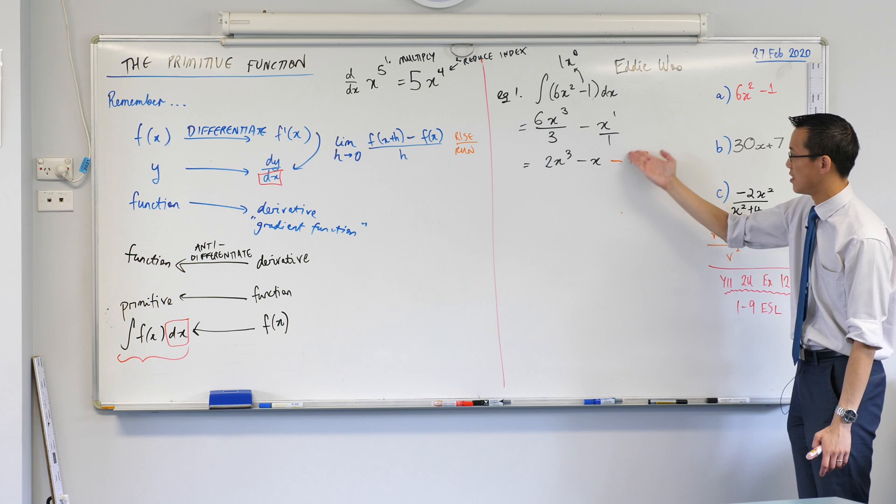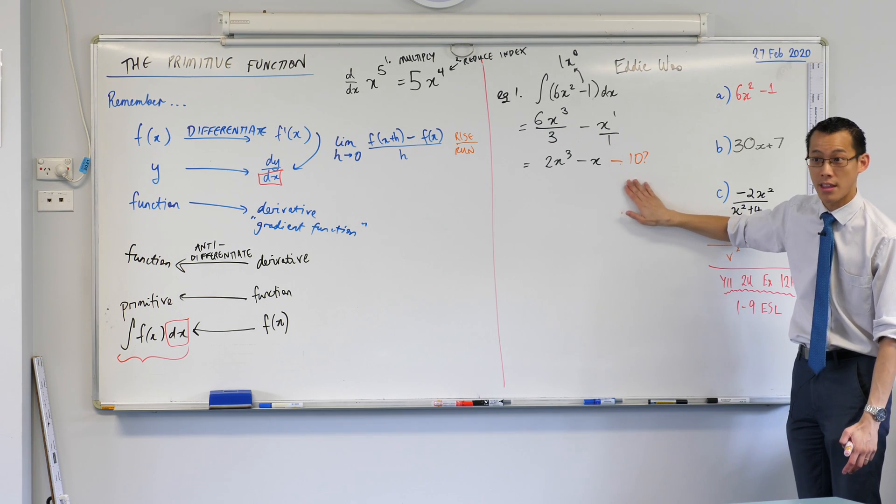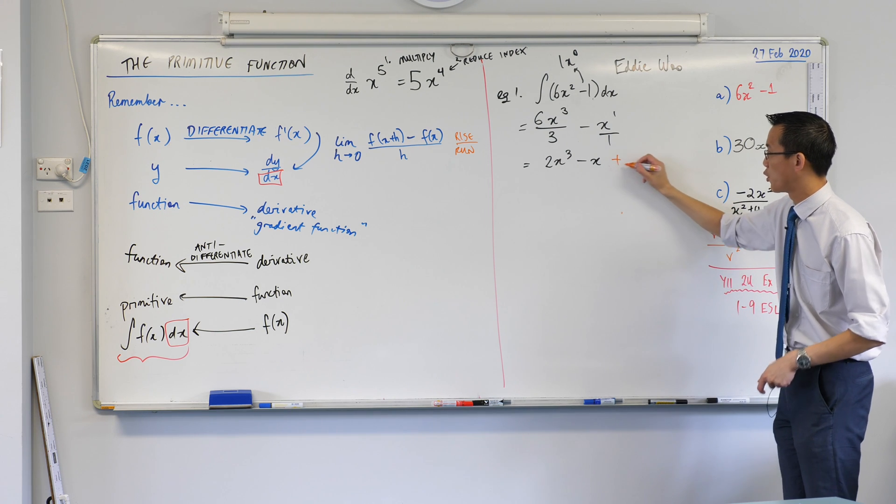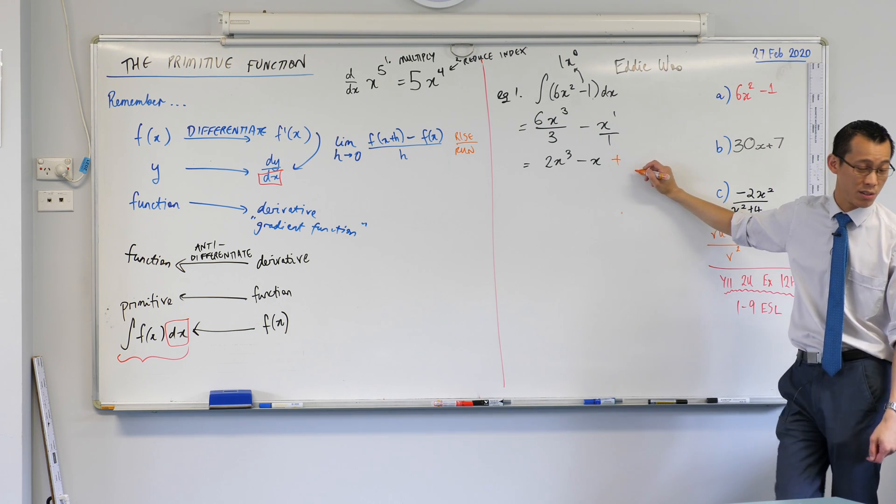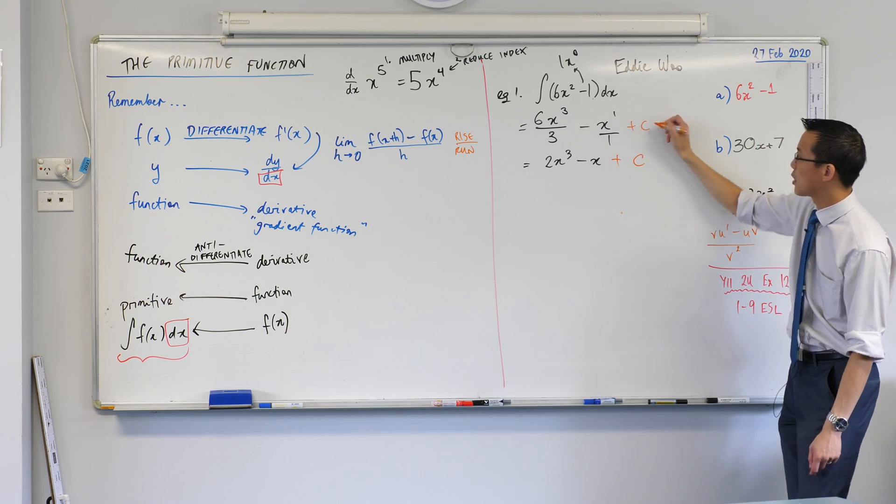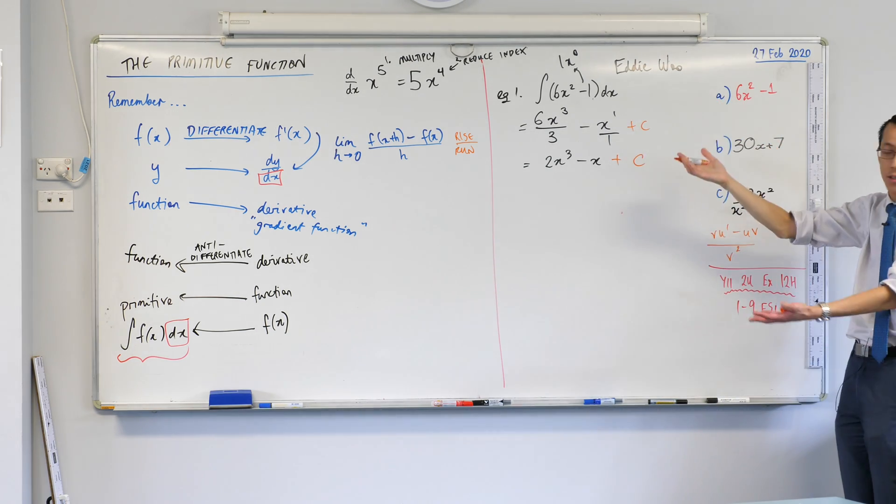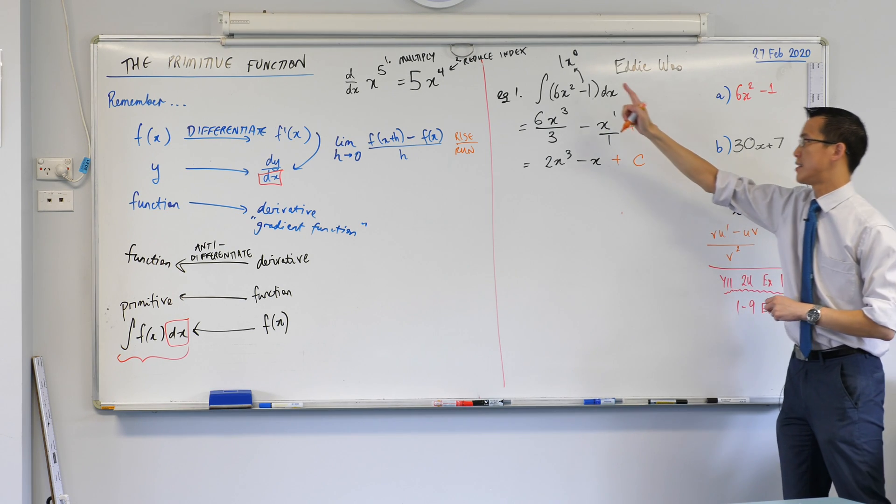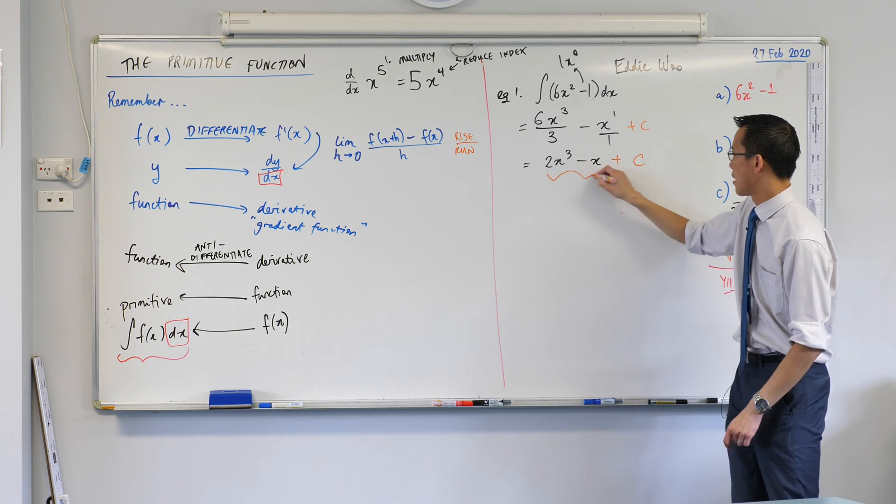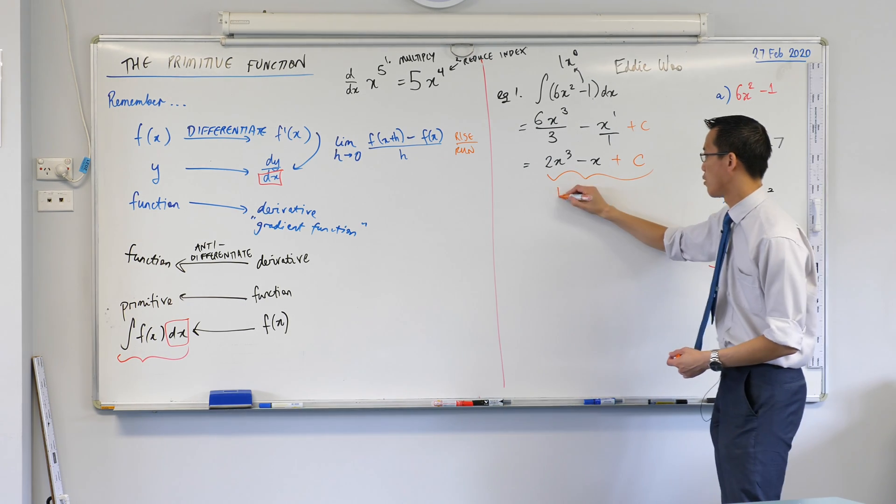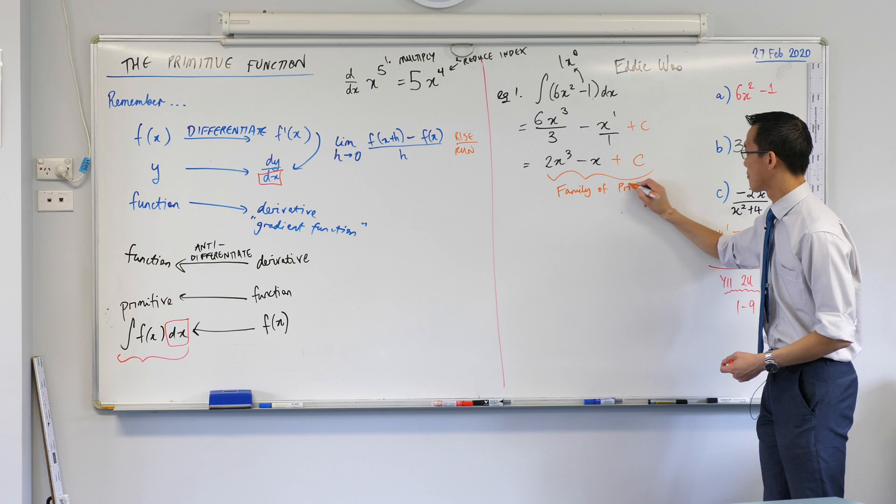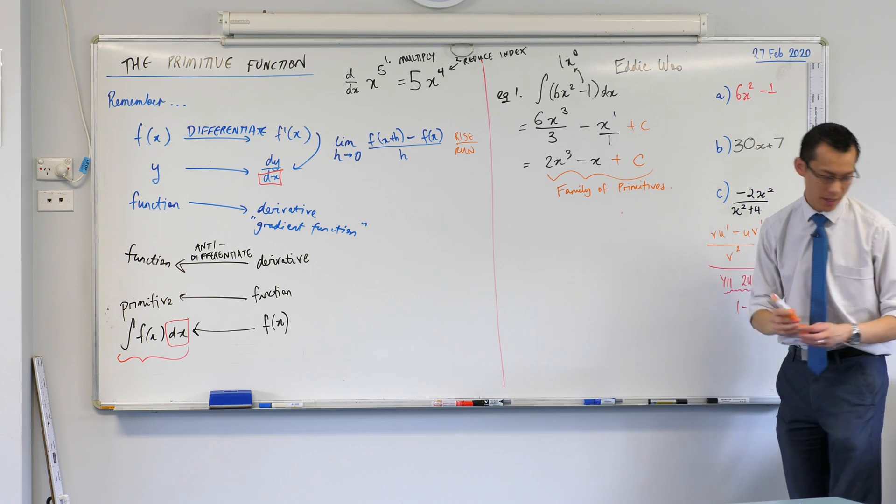Now the way we catch this, the way we say, well, it could be anything. Any constant number could tag along the end here. Is we say, well, it could be any constant. Instead of writing constant because we're lazy, we choose a letter, we choose the letter C. So this is actually something which you have to include all the way through because any of these could differentiate to give you 6x² - 1. Does that make sense? So this is important. This guy here is a whole family of primitives, and that's so important I'm going to write it down.